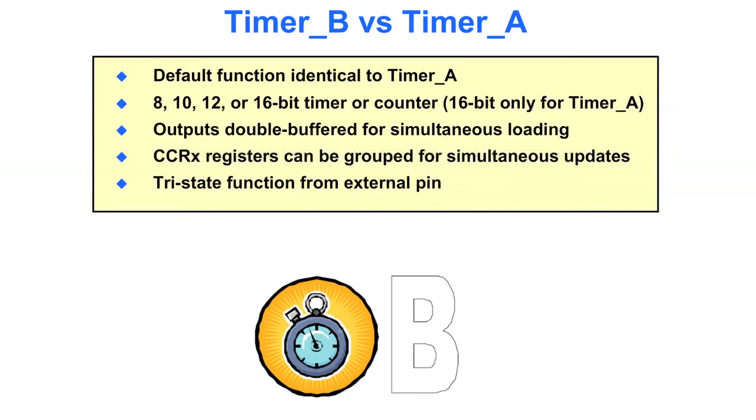The outputs are double buffered on timer B for simultaneous loading. The counter and compare registers on timer B can be grouped for simultaneous updates if you're doing something like PWM very quickly. And the timer B external pin can be tristated.